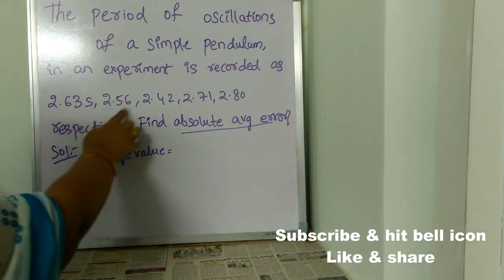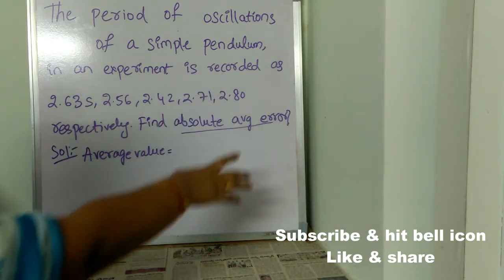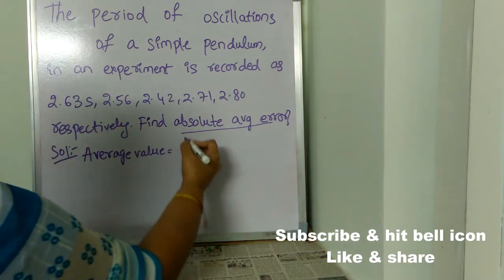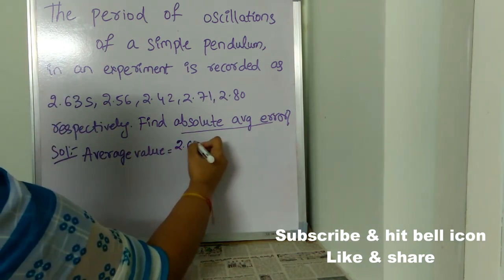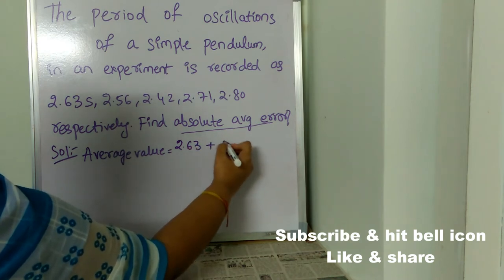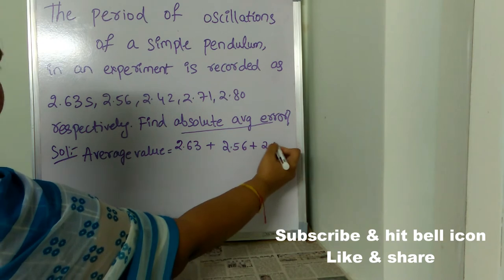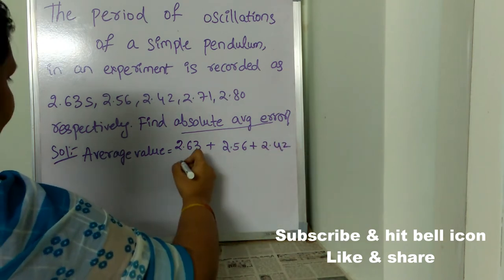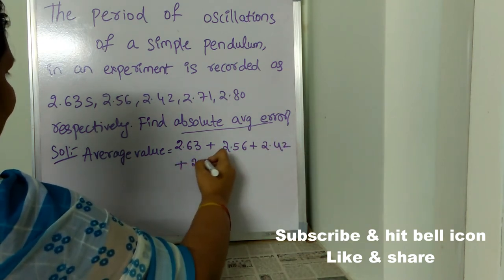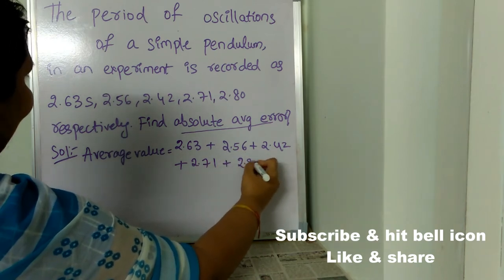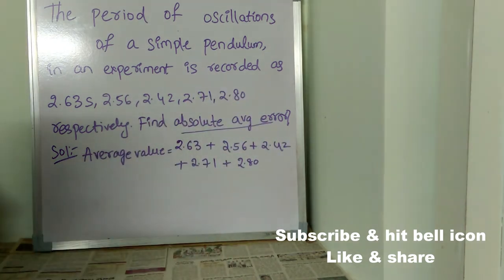These five are the values which they have given. Now, we need to find the sum of them which is 2.63 plus 2.56 plus 2.42 plus 2.71 plus 2.80. We are done with numerator.